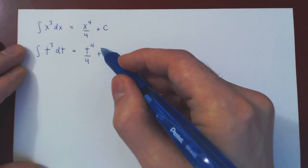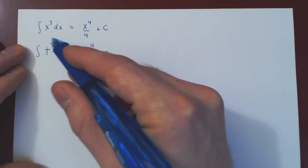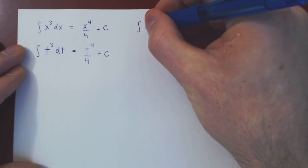And of course, if you differentiate this function with respect to t, you get t cubed. And you can use, of course, any other variable.